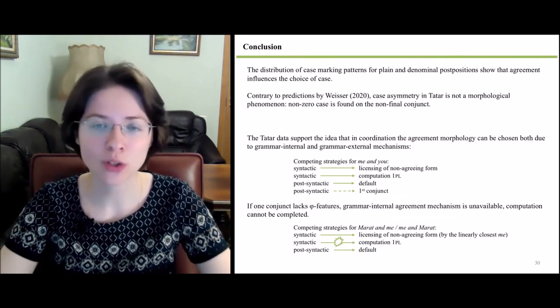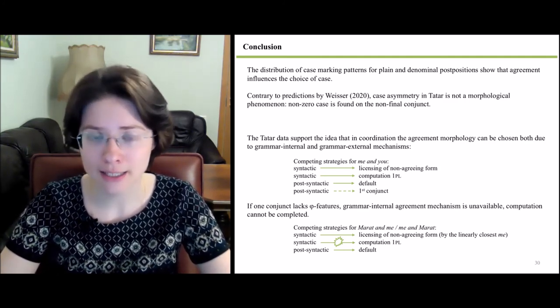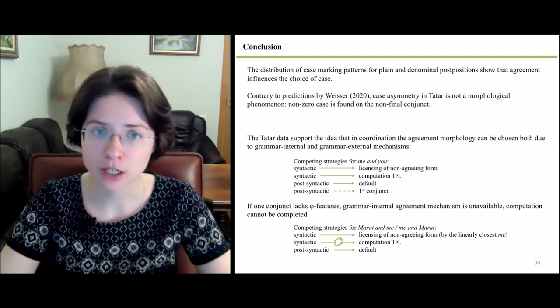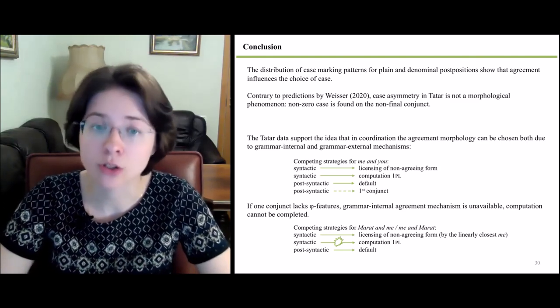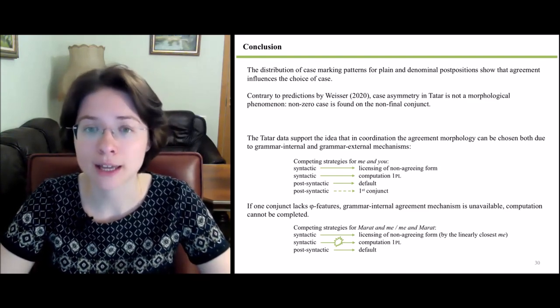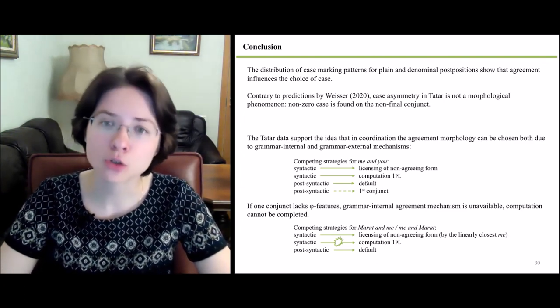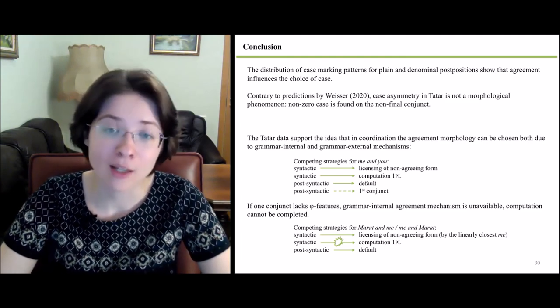To sum up, we have shown the following. The distribution of case marking patterns for plain and denominal postpositions supports the idea that agreement influences the choice of case. Contrary to predictions by Weiser 2020, case asymmetry in Tatar is not a morphological phenomenon, and non-zero case is actually found on the non-final conjunct. The Tatar data also supports the idea that in coordination, agreement morphology can be chosen both due to grammar-internal and grammar-external mechanisms. However, if one conjunct lacks phi features, the grammar-internal agreement mechanism is unavailable and computation cannot be completed. We thank you for your attention and will be very happy to discuss questions at the conference or in the comments below. Goodbye and have a nice day!